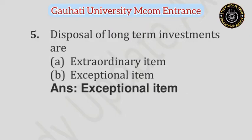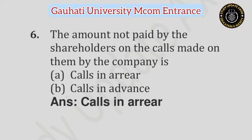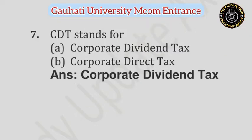Question number 5: Disposal of long-term investment are — Option A: Extraordinary Item, Option B: Exceptional Item. Answer is Exceptional Item. Question number 6: The amount not paid by shareholder on the calls made on them by the company is — Option A: Calls in Arrears, Option B: Call in Advance. Answer is Calls in Arrears. Question number 7: CDT stands for — Option A: Corporate Dividend Tax, Option B: Corporate Direct Tax. Answer is Corporate Dividend Tax.